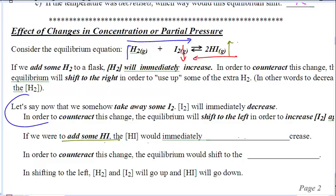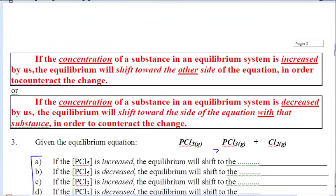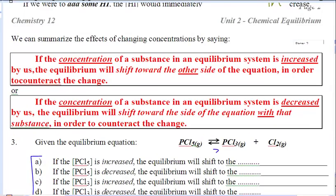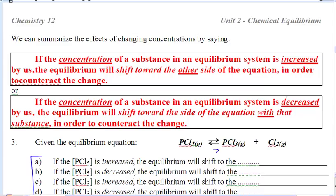To fill in these blanks: if I add some HI, the amount of HI would immediately increase. The system does not want that to happen, so to counteract that change, equilibrium would shift to the left, away from there, to bring it back down to the way it was. When it shifts to the left, I'm going to have a little more H2 and I2, and HI will go right back down — it undid my change. To summarize: if I increase a concentration, it's going to shift away from that to bring itself back down. If I decrease the concentration, it's going to shift toward that side. It undoes my change.